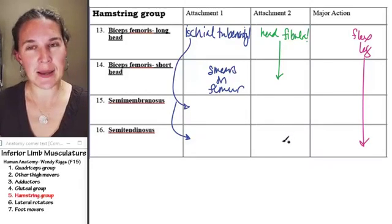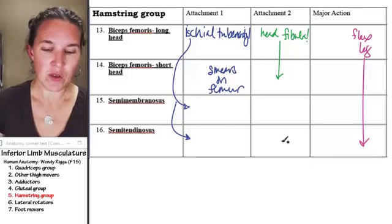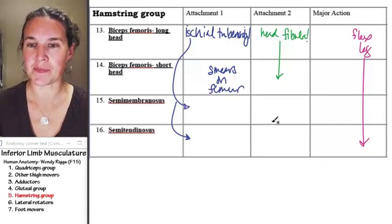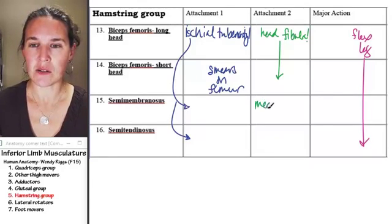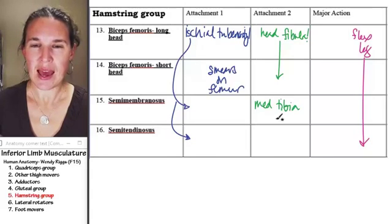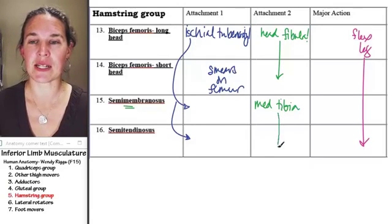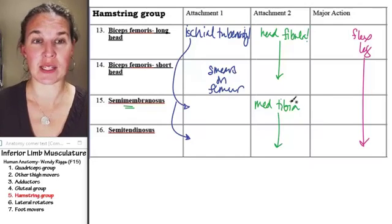Semimembranosus and semitendinosus, those guys attach to the tibia, medial tibia, and they both attach medially to the tibia. Medial tibia. And in fact, semimembranosus is slightly more medial than semitendinosus, but there are other ways that we can tell.